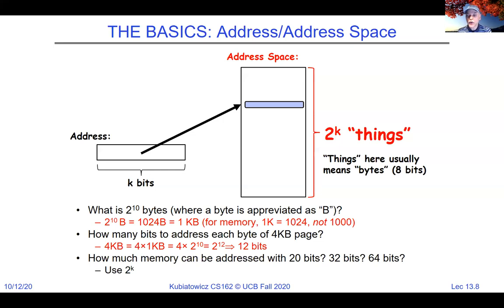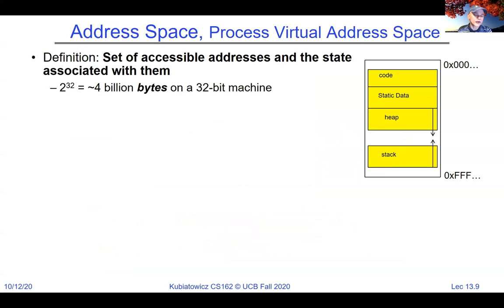How much memory can be addressed with 20, 32, or 64 bits? Two to the K — use your calculator. Two to the 32 is a little more than four billion bytes. On a 32-bit machine, the address space runs from 0x00000000 to 0xFFFFFFFF, giving 32 bits to specify a particular byte within those four billion bytes.